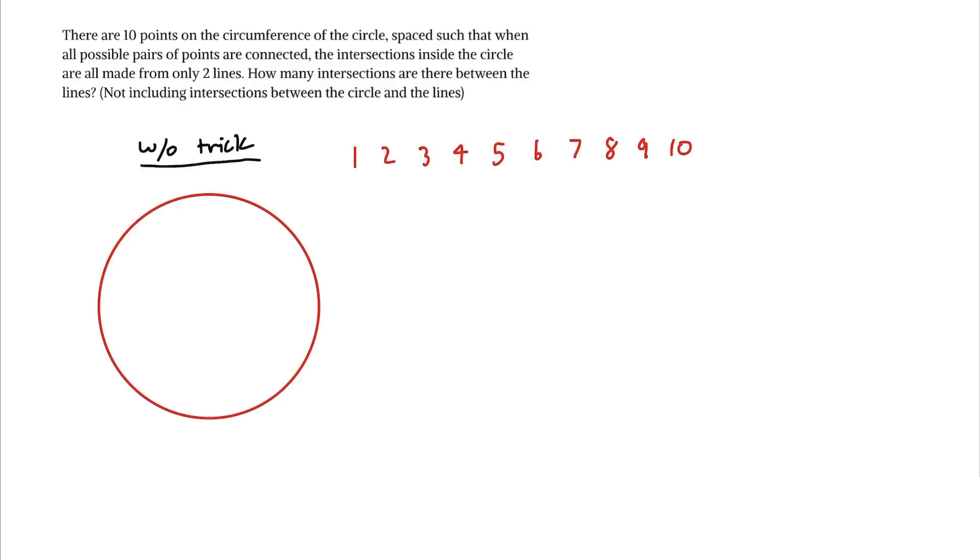At one point it's not even possible to make a line, so there are zero intersections. With two points we can make a line but there's no intersections.